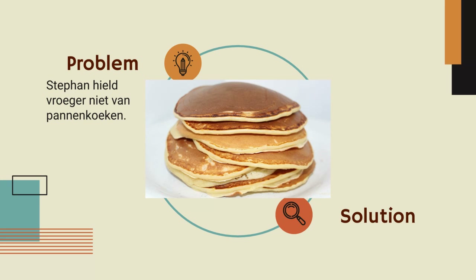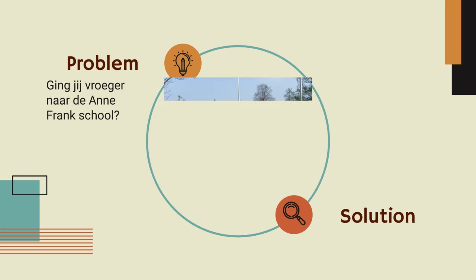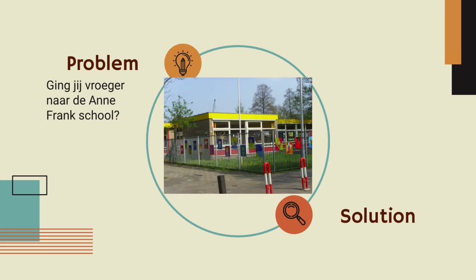Next problem: 'Stephen hield vroeger niet van pannenkoeken.' What is the solution? Stephen didn't use to like pancakes. Now he does — he loves them. And: 'Ging je vroeger naar de Anne-Frank school?' Did you use to go to Anne Frank school? Did you use to go to Anne Frank school?